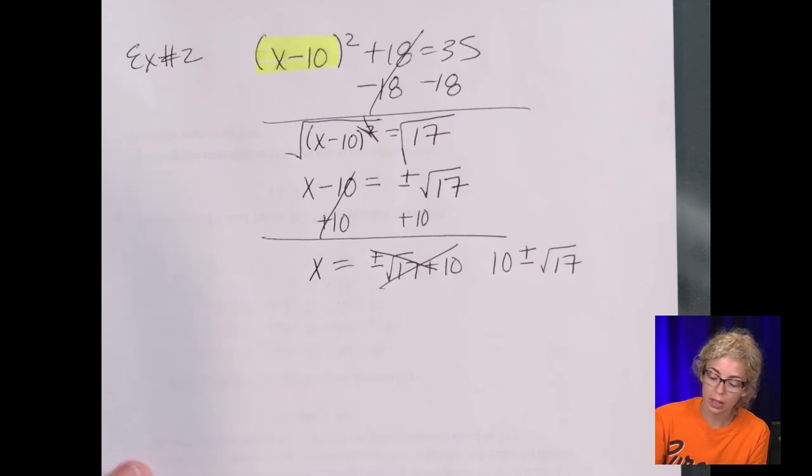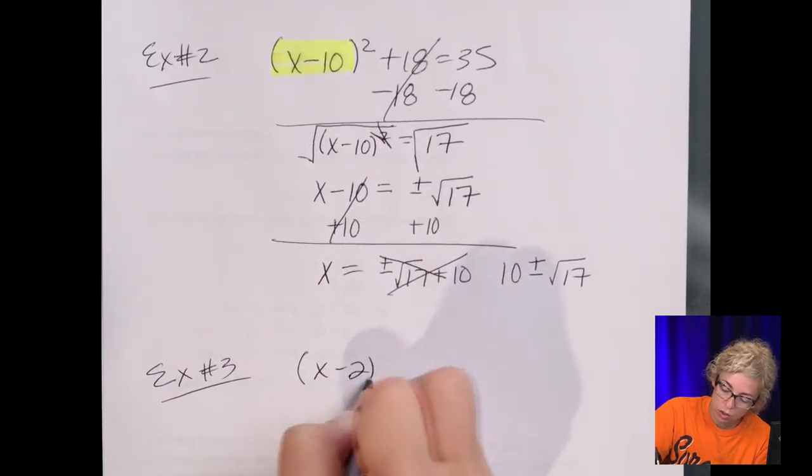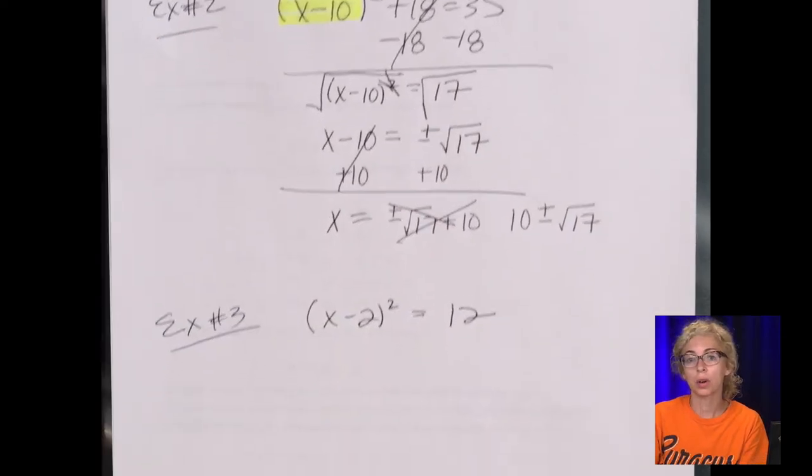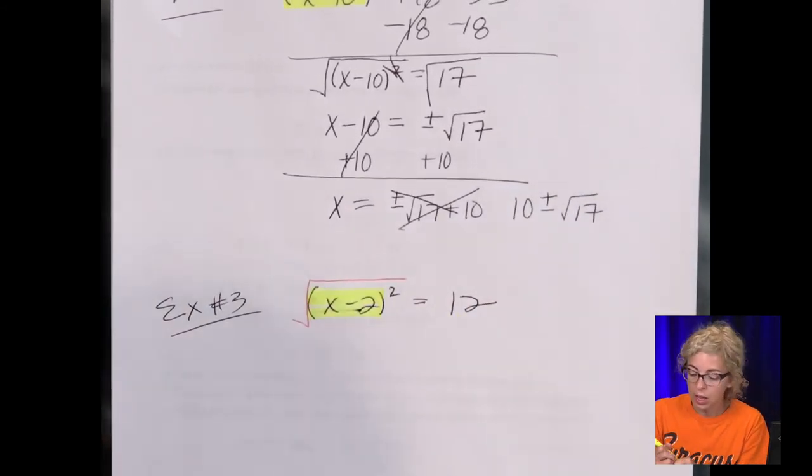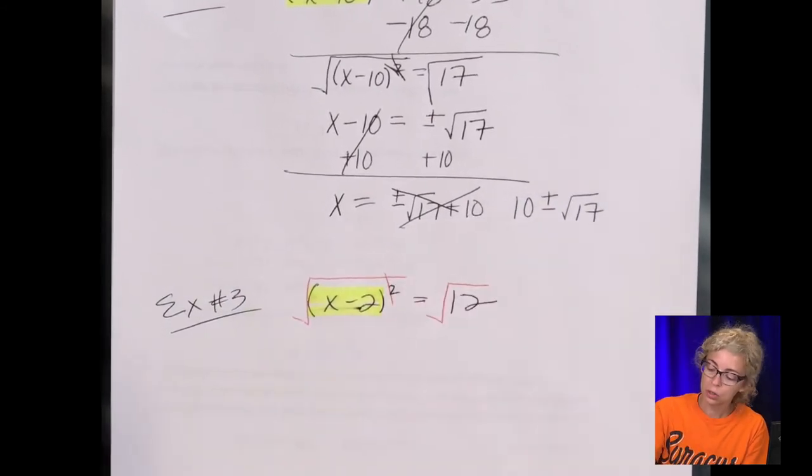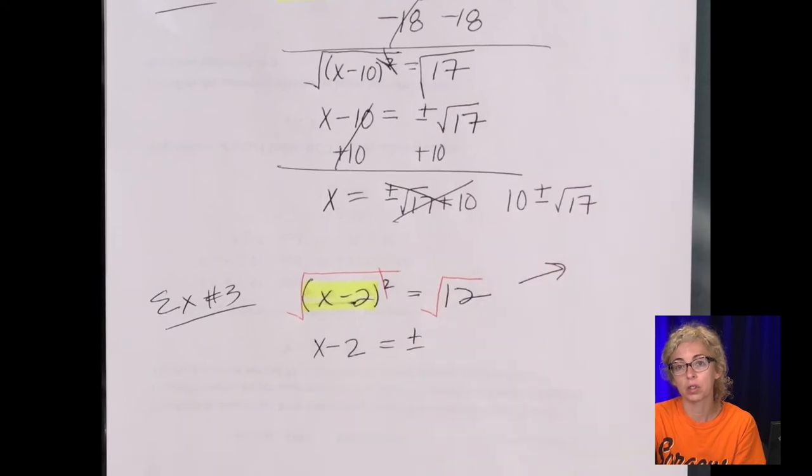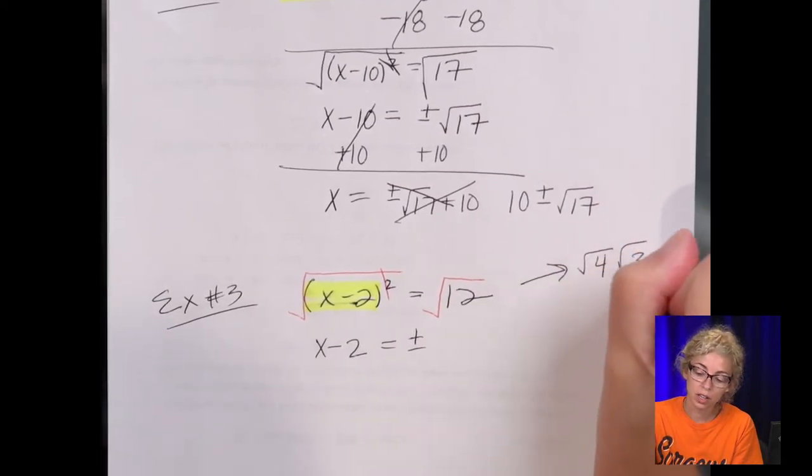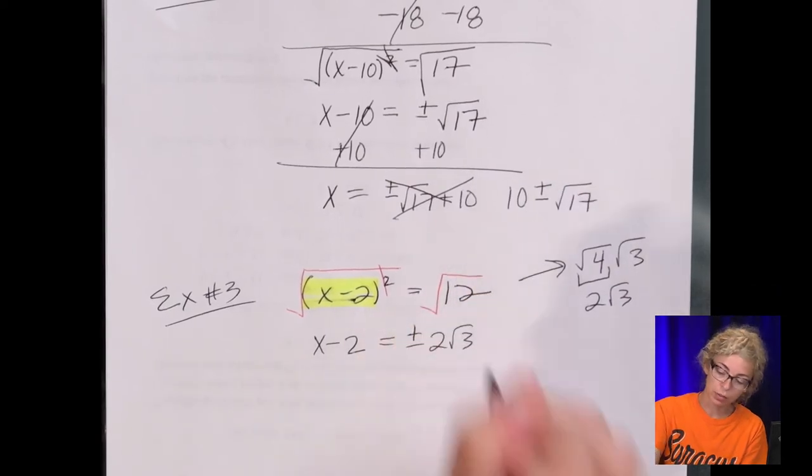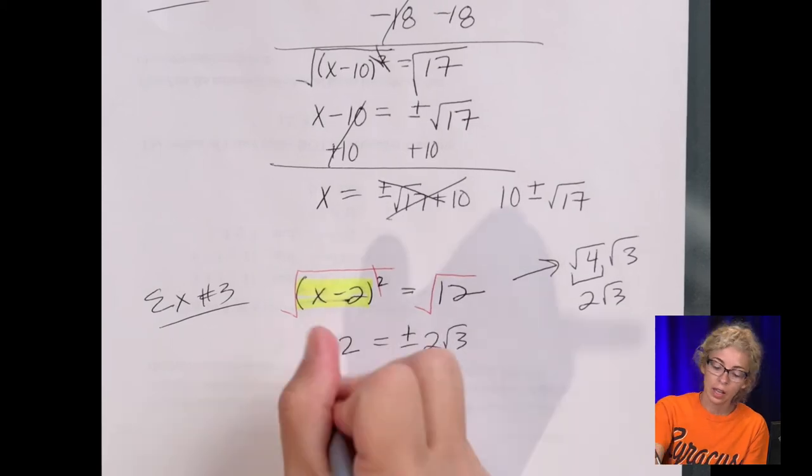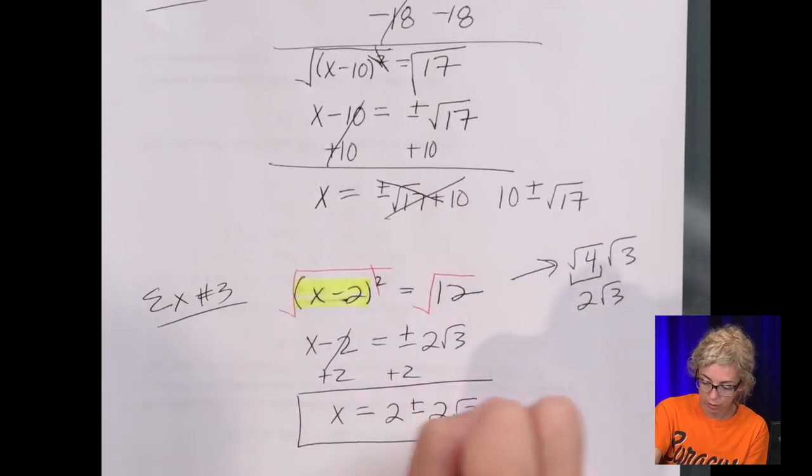Now say, for example, we had an equation, I'll do one more, that was just x minus 2 squared equals 12. Now I picked 12 because when I take the square root, again, because it's this binomial that's being squared, not just an x, 12 we can simplify. So this ends up being x minus 2 equals, put in your plus minus, and then off to the side, I like to simplify the 12. So setting it up, it's going to be 4 times 3, 4 being the perfect square. And then that's going to be 2√3. So I like to simplify again off to the side, and then write the simplification there. And then add the 2. It ends up being x equals 2 plus or minus 2√3.